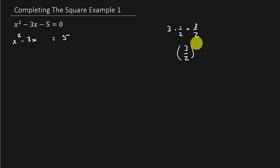And then you have to square it. So 3 squared is 9, 2 squared is 4, and so that's plus 9 over 4. And since we added 9 over 4 to this side, we have to add 9 over 4 to the other side.